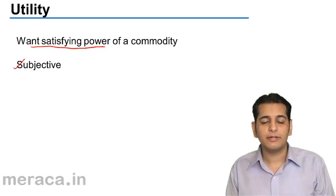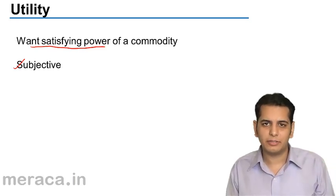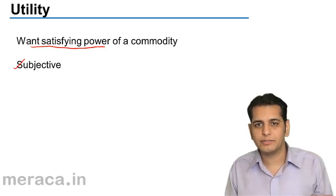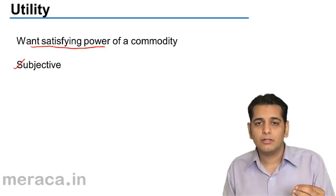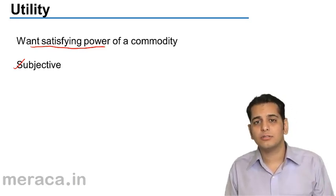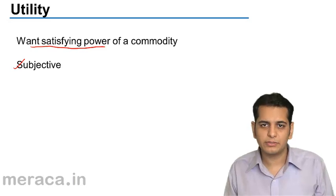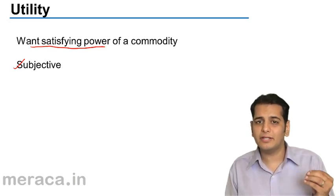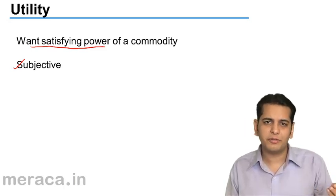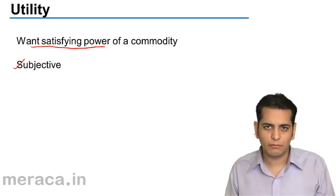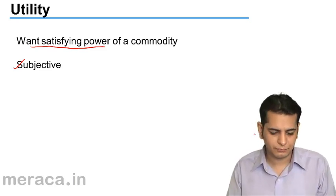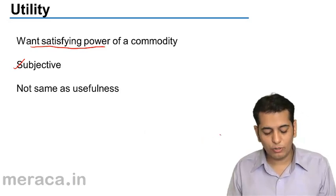For example, a person who likes to have sweets may derive a good amount of utility from chocolates, but a person who does not like sweets may not derive any utility from chocolates. So utility of a commodity for different people is different — thus we call utility subjective.